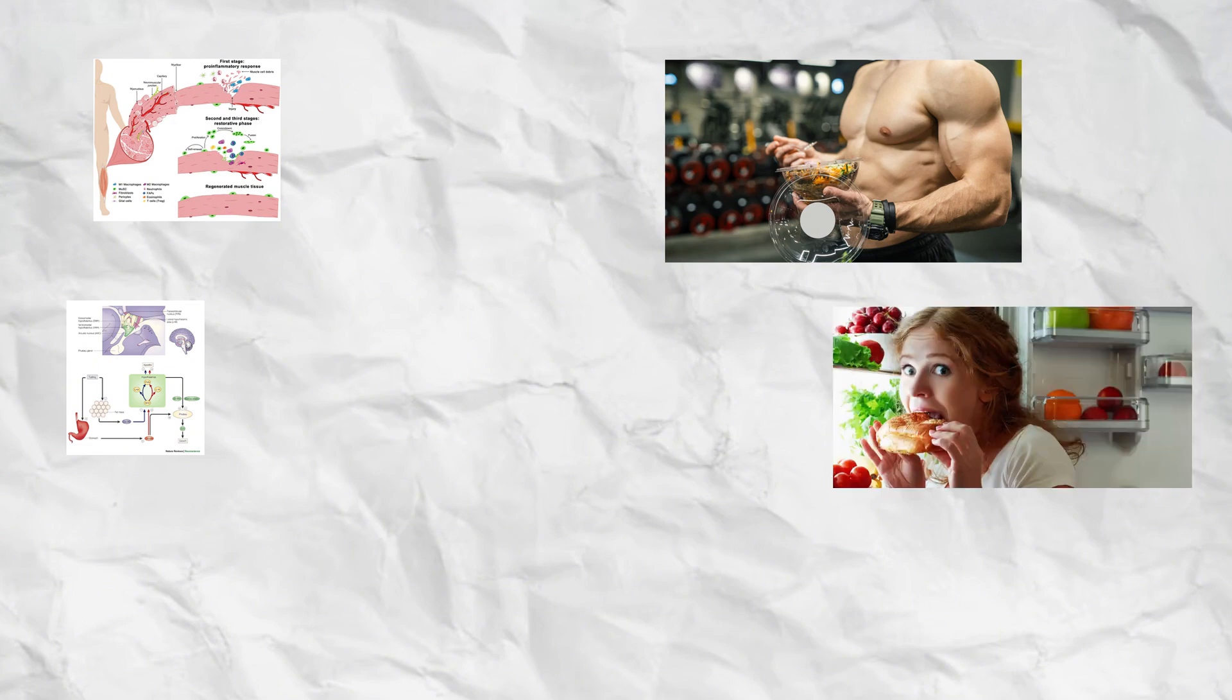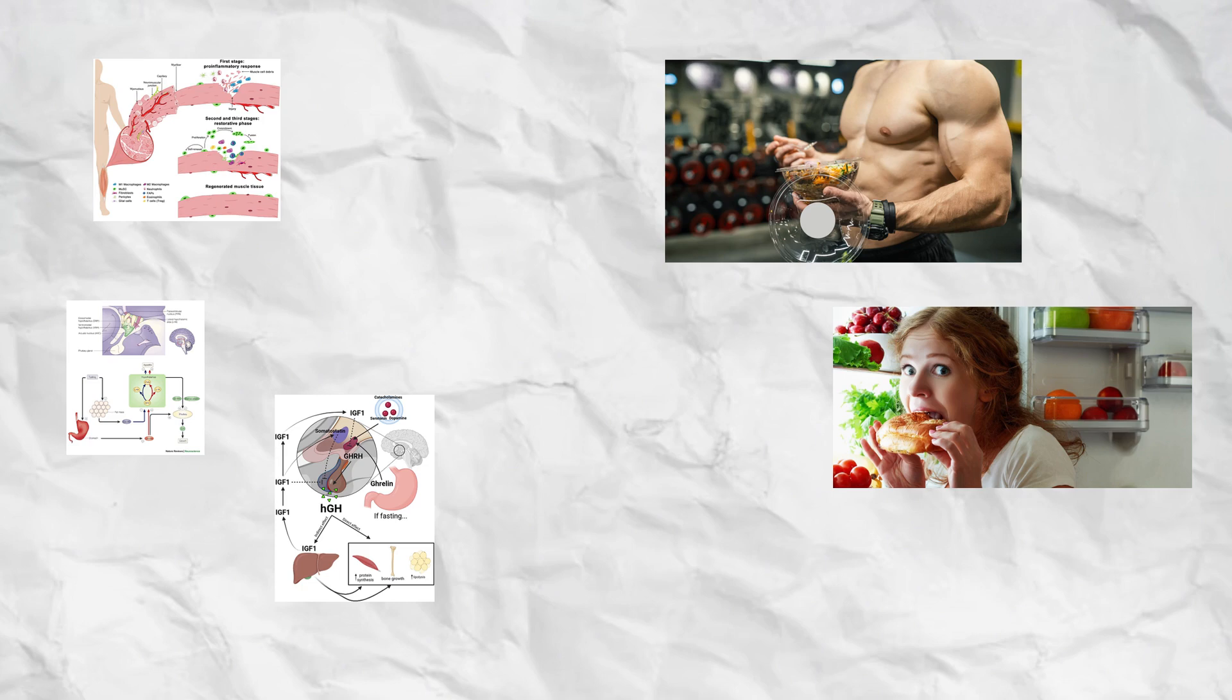What sets GHRP-6 apart is its powerful appetite-stimulating effect, making it popular among bodybuilders trying to bulk up or maintain high calorie intake. However, this same property can cause excessive hunger if used improperly. GHRP-6 can also mildly elevate cortisol and prolactin levels, which may affect hormone balance over time.